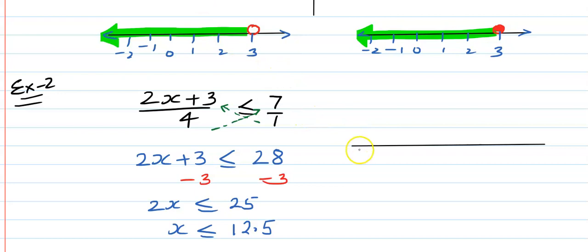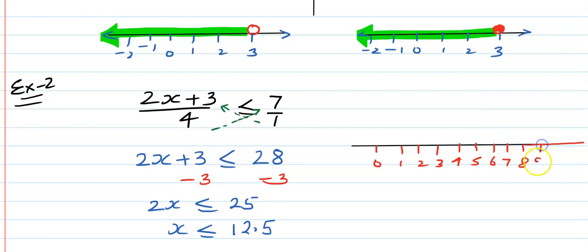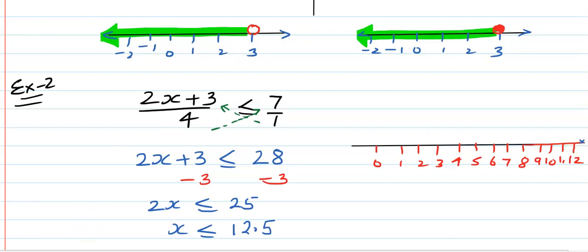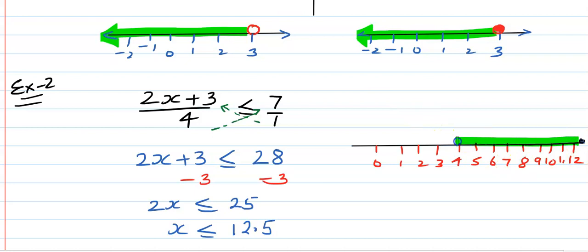If you need to show this on a number line: 0, 1, 2, 3, 4, 5, 6, 7, 8, 9, 10, 11, 12, and 12.5 will be somewhere here. That point is included — so make a black circle at 12.5, and all these points will be part of the solution set.